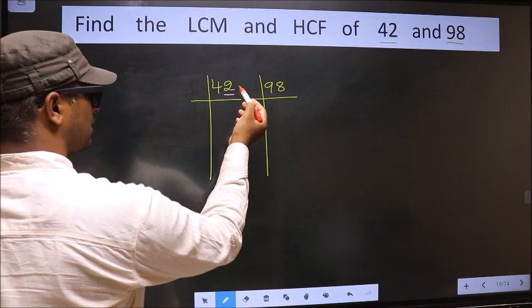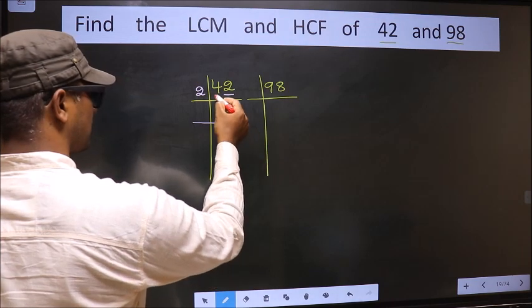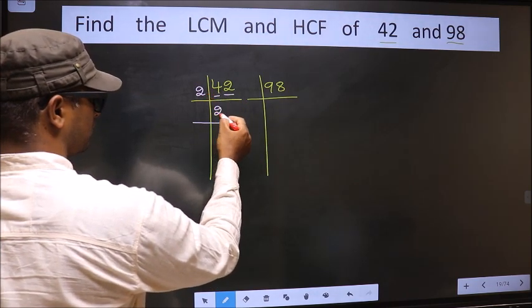Okay, next. For this number, last digit 2, even, so we take 2 here. The first number 4, when do we get 4 in 2 table? 2 times 2 is 4.